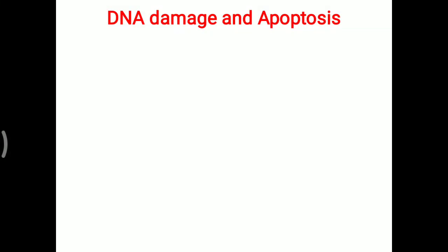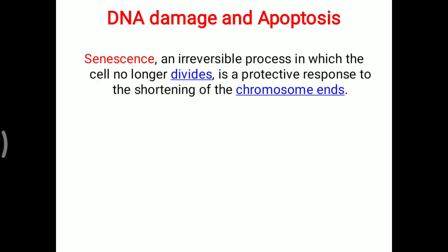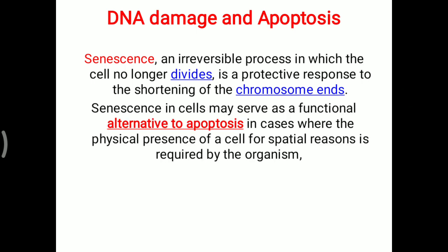Today's topic is about DNA damage and apoptosis. We have already seen different types of DNA damage, and apoptosis is programmed cell death. Wherever DNA damage occurs, sometimes senescence — an irreversible process in which the cell no longer divides — occurs instead. It is a protective response to the shortening of chromosomal ends, and senescence in cells may serve as a functional alternative to apoptosis.